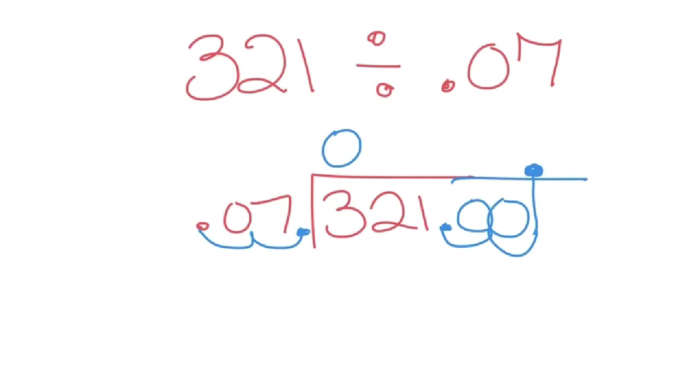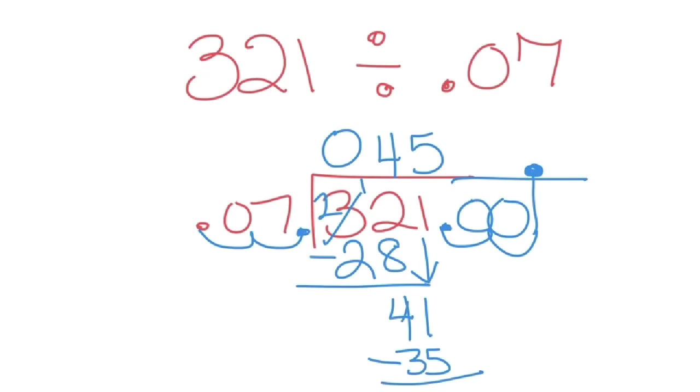7 can go into 32 four times. 4 times 7 is 28. Subtract. 12 minus 8 is 4. Bring down the 1. 7 goes into 41, let's see, that would be 5 times. 5 times 7 is 35. If we subtract, we get 6.